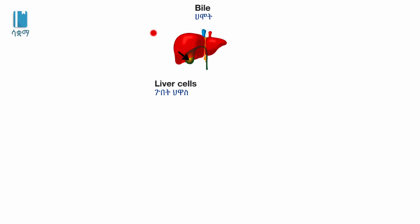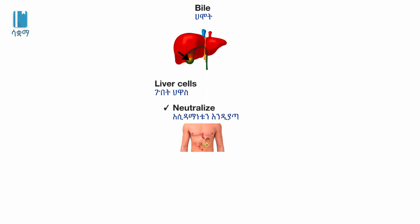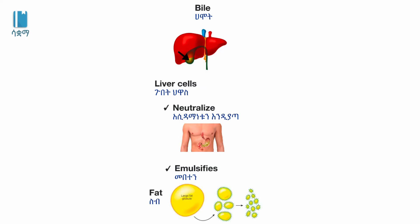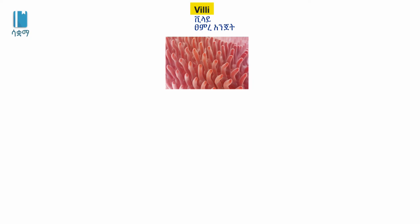The liver cells contain blood cells. Our small intestine has a finger-like projection, which is a finger-like projection that increases surface area for absorption.